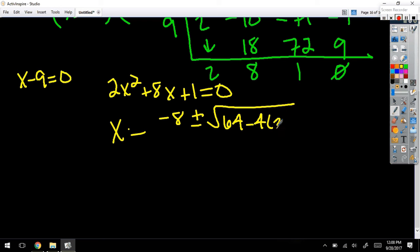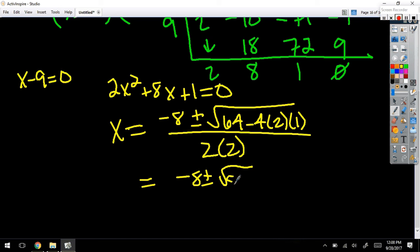Which is 64 minus 8 is 56 over 4. Can you simplify √56? 4 and 14, so that would be 2√14.